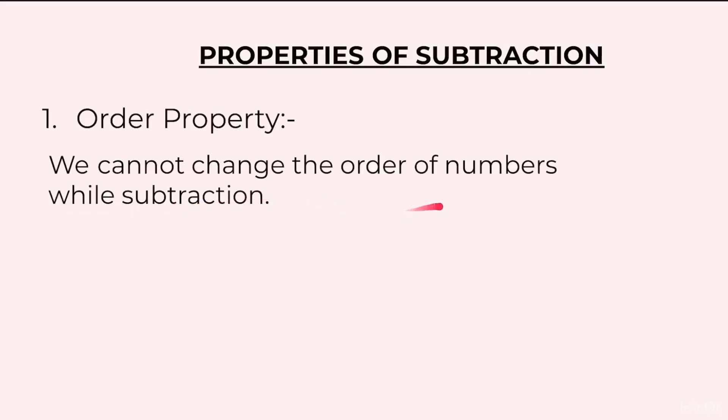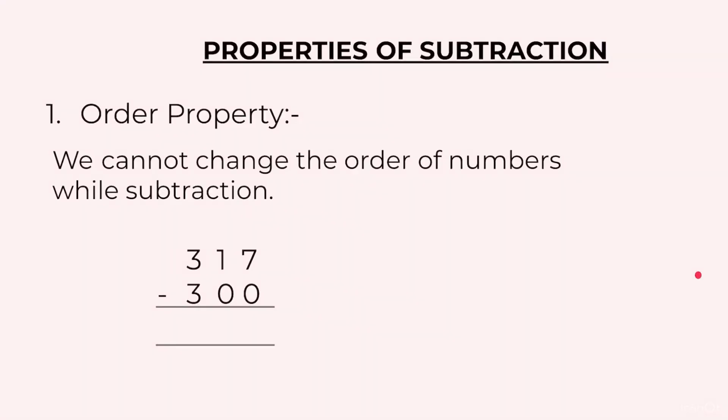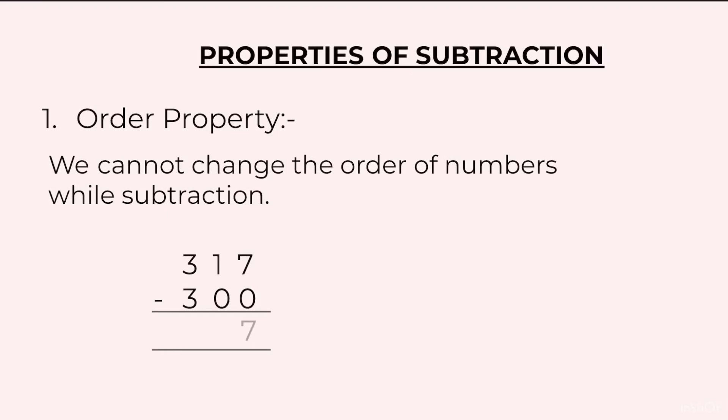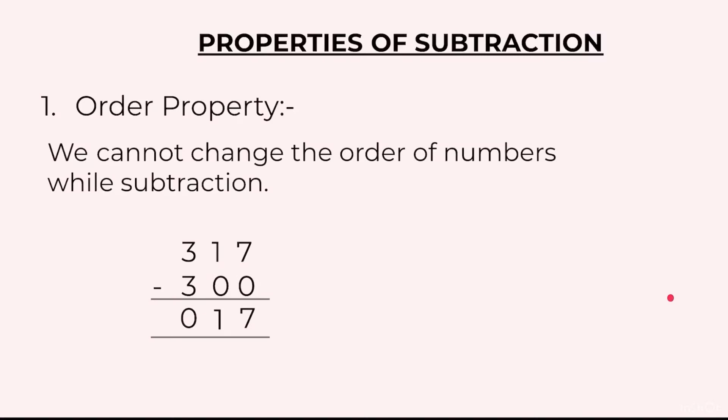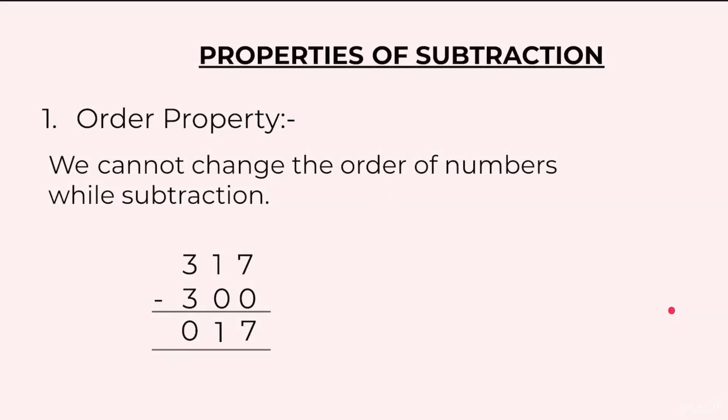Properties of subtraction. The first property is order property: we cannot change the order of numbers while subtracting. For example, 317 minus 300 when you subtract you will get 17. This is not the same as 300 minus 70. At this stage you cannot do 300 minus 70 because 300 is a smaller number.